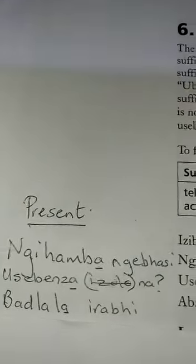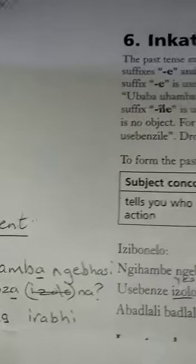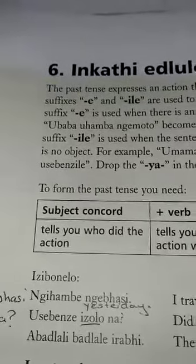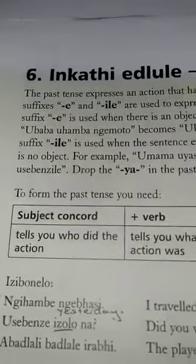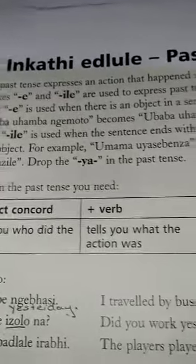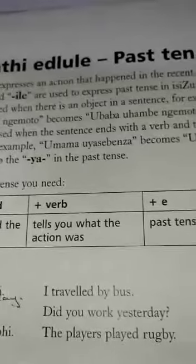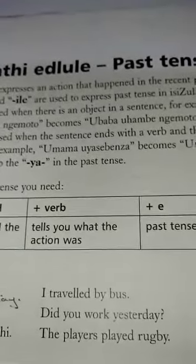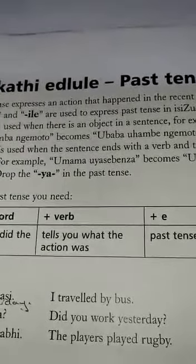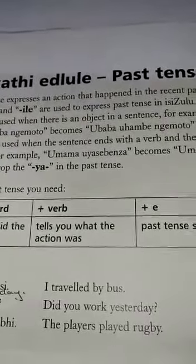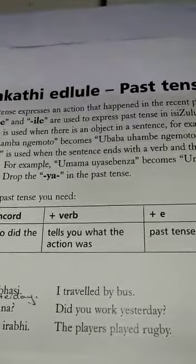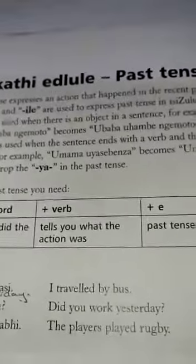Badlala i ragbi. Abadlali badlale i ragbi — the players played rugby. So the A at the end of the verb is simply substituted with an E.